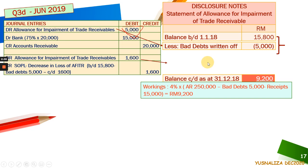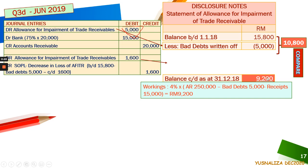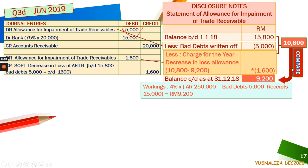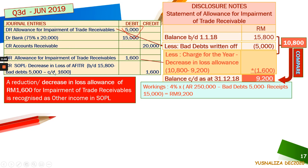To know how much you need to adjust in your statement of profit or loss — either as an increase or decrease in loss allowance — you compare the running outstanding balance with the estimation. So 10,800 compared with 9,002: you can see there was a decrease in the estimation of 1,006. So that 1,006 is what you are going to adjust in your journal entry.